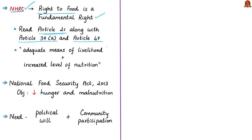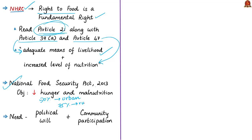The National Human Rights Commission (NHRC) has stated that the right to food is a fundamental right inherent to a life with dignity. Article 21 (right to life and personal liberty) must be read together with Article 39(a) — requiring the state to secure adequate means of livelihood for all citizens — and Article 47. The National Food Security Act of 2013 guarantees subsidized food to 50% of the urban population and 75% of the rural population, aiming to reduce hunger, malnutrition, and related deaths.